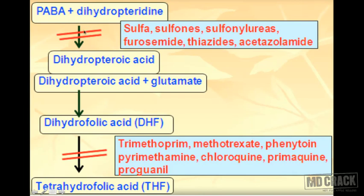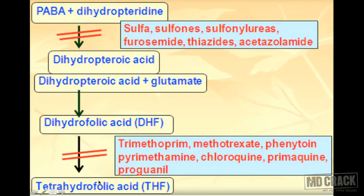In more detail: PABA with dihydropteridine forms dihydropteroic acid, which then receives glutamate to become dihydrofolic acid (DHF). DHF is then converted to THF. As a simpler way to remember: PABA to folic acid (DHF), and folic acid to folinic acid (THF).